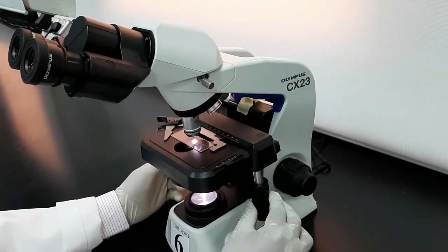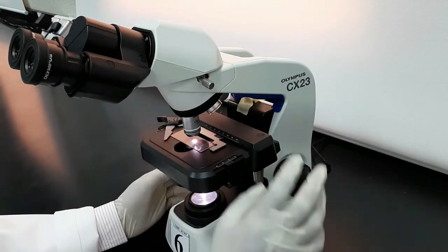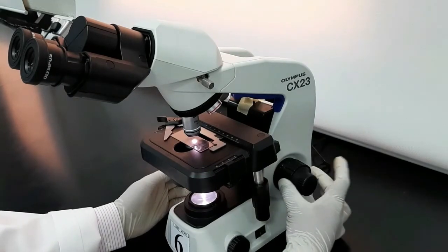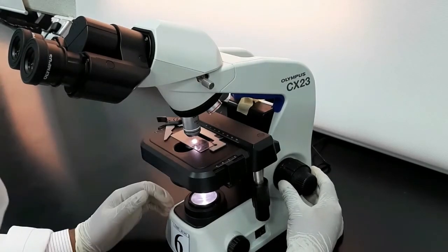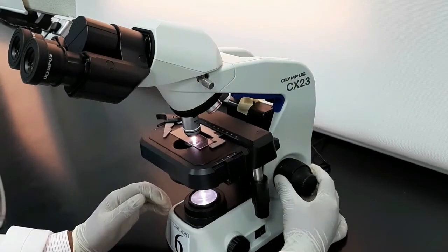Then place the slide on the stage and adjust the position of the slide with the slide adjustment knob. Then raise the coarse adjustment knob until the oil touches the objective lens.